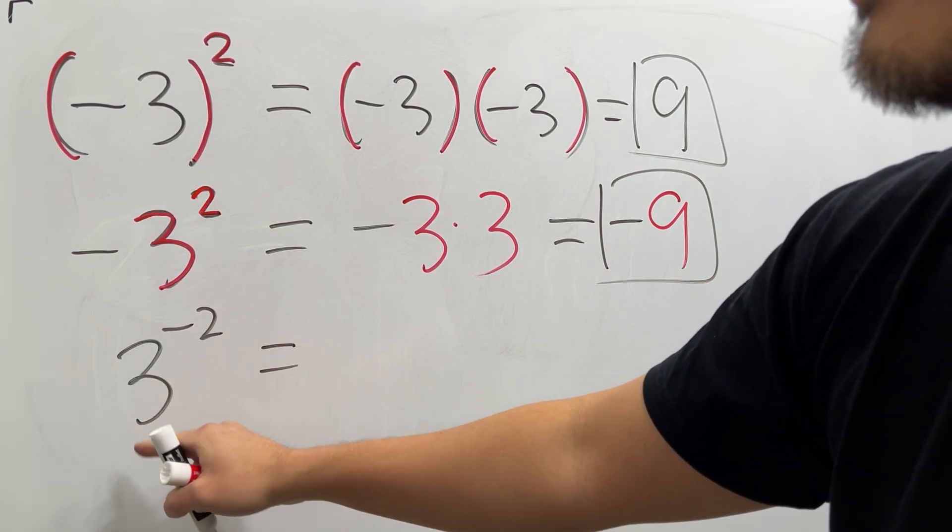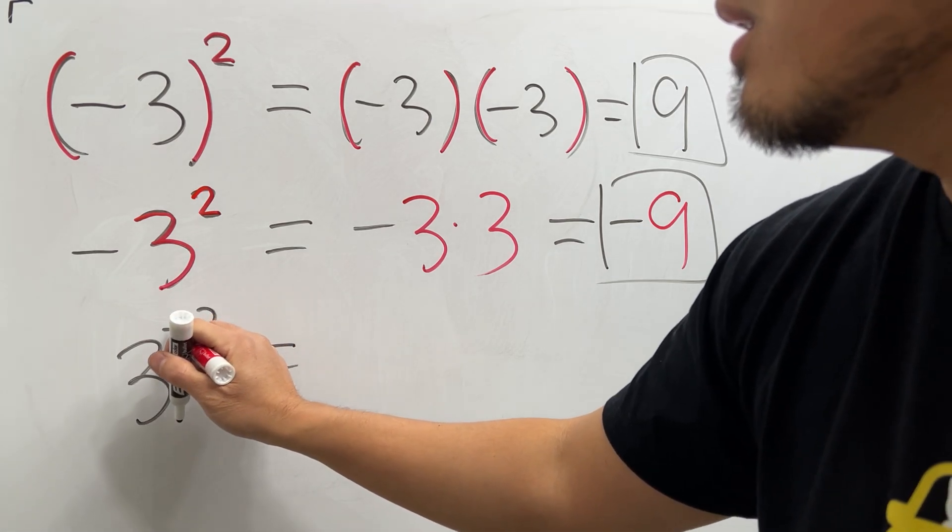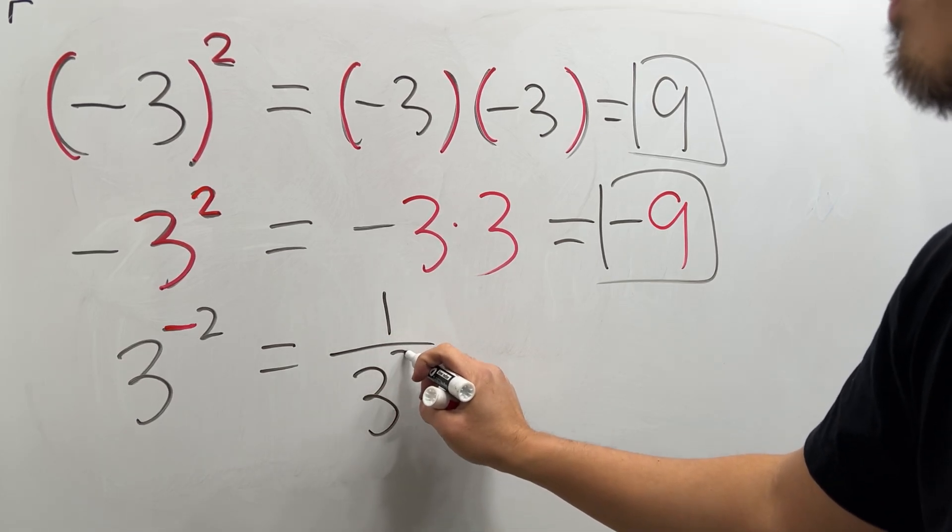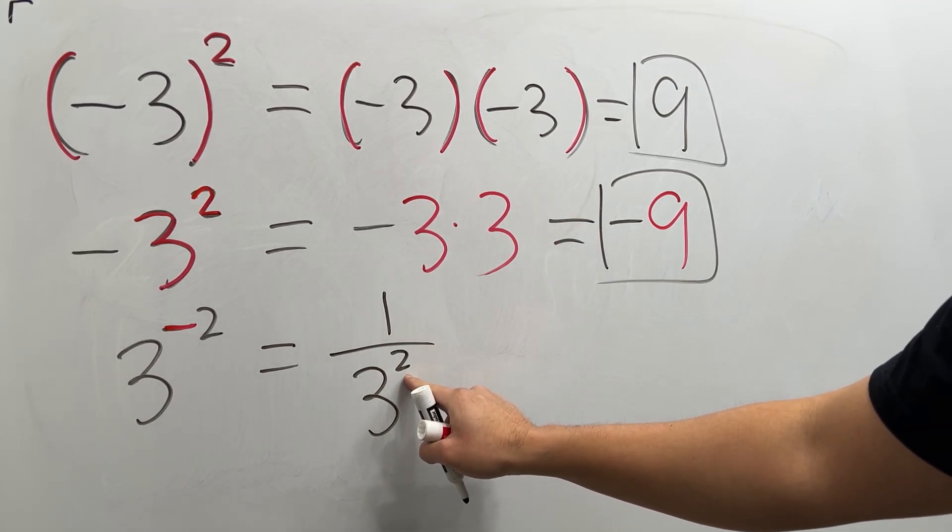Lastly, you have a negative two right here and then the three. So the negative exponent here tells you bring this down to the bottom. You have 1 over 3 to the positive 2, and then you do 3 to the second power, which is 3 times 3, which is 9.